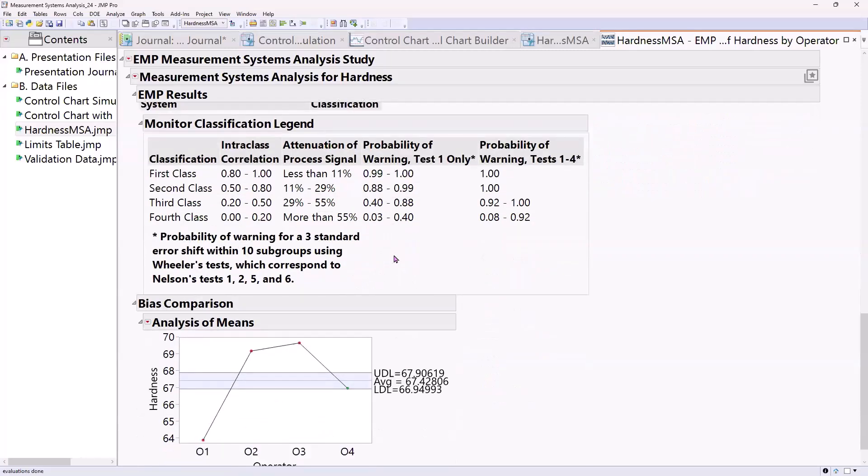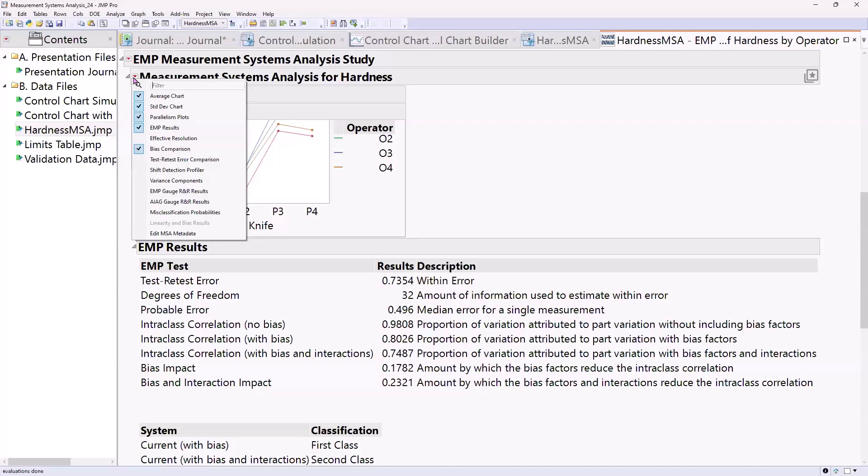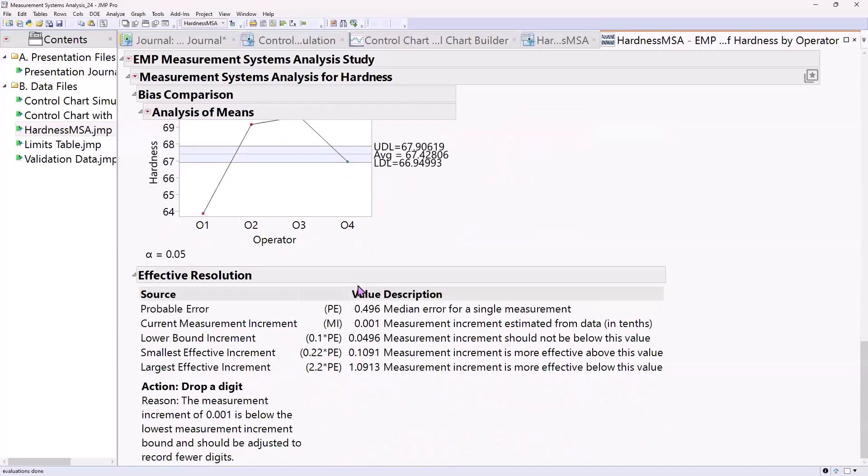Next question is, how many digits do I report when I show the data? So let's look at the effective resolution report for that. And we're going to take a look at these measurement increment bounds that are a function of the measurement increment and the probable error. So these are like control limits on your measurement precision. I'm using Clark, I'm using your words on that. I really like that. It makes a lot of sense.